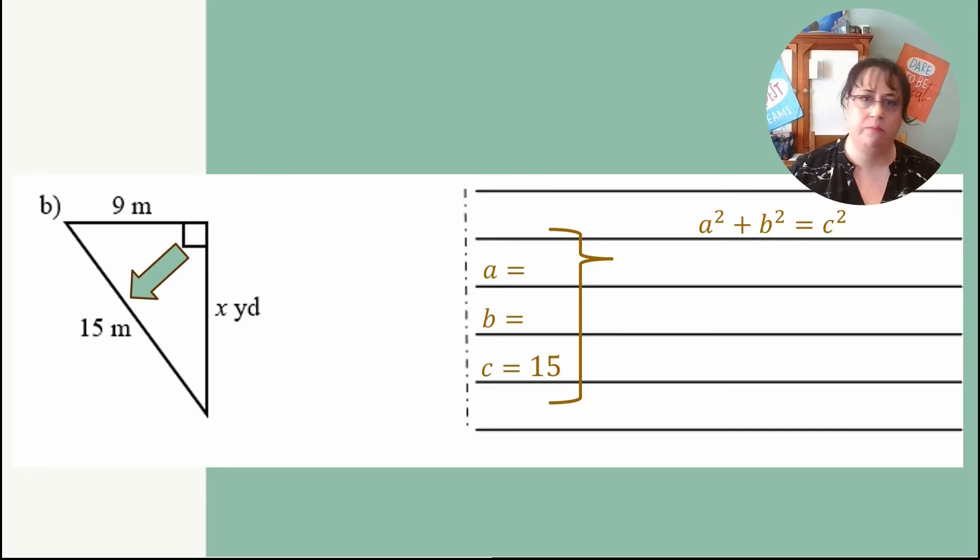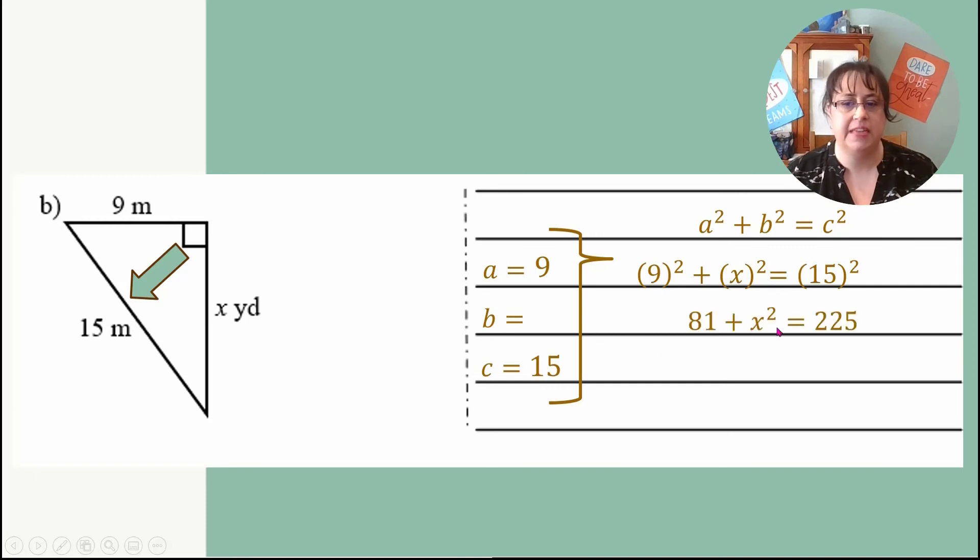A and B, those are interchangeable. They could be either one, either one of those two legs. It doesn't matter which one's A and which one's B. So we're going to write down A as our 9 and then B as our X. So now we're going to substitute that into A squared plus B squared equals C squared. So every time I see A, I'm going to put a 9. B is going to be our X and 15 is going to be our C. So 9 squared plus X squared is equal to 15 squared. So 9 squared is 81 and 15 squared is 225. So now I have 81 plus X squared equals 225.